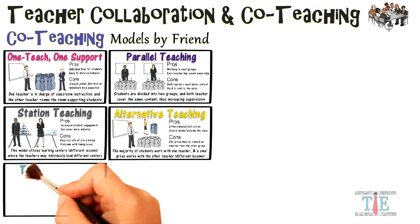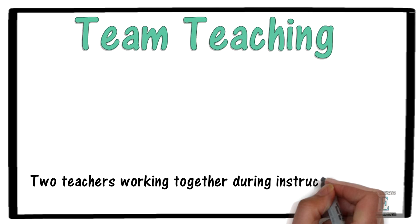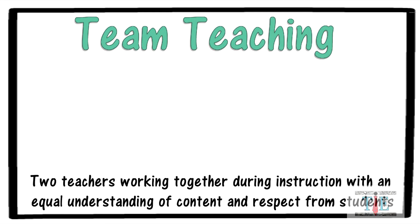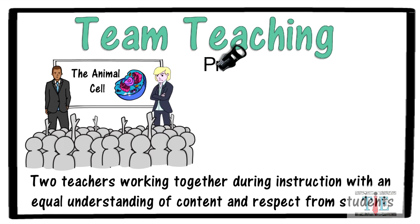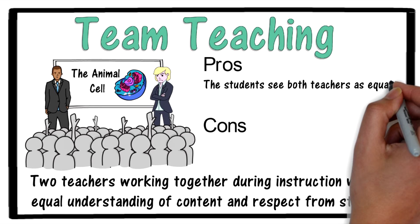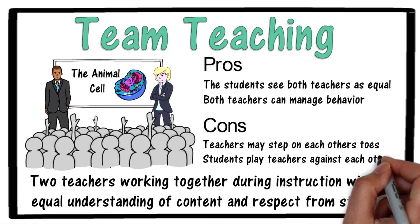And now the last model — the most effective model — team teaching. In team teaching, two teachers work together during instruction with an equal understanding of content and equal respect from students. Both teachers are in front of the room, simultaneously teaching the lesson, taking and answering questions. The positives are that students see both teachers as equals, and both teachers can manage behavior. The negatives are that the teachers may step on each other's toes, and students can often play teachers against each other.